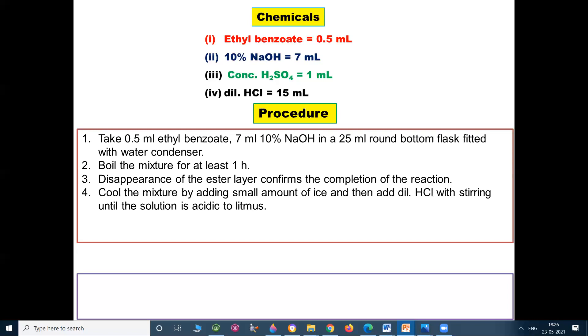Cool the mixture by adding small amount of ice and then add dilute HCl with stirring until the solution is acidic to litmus. Filter the product separated out.